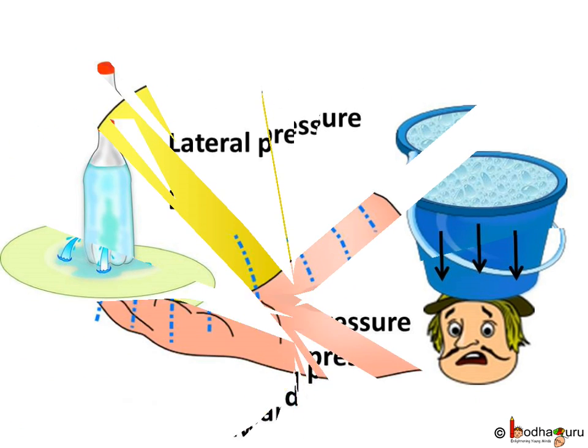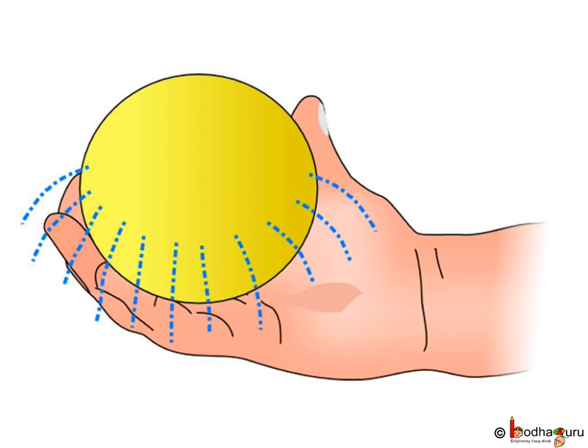We take a rubber ball filled with water and pierce holes in it with a pin in different places. If we press it hard, water will rush out of all the holes with equal force.